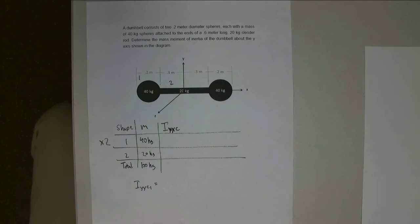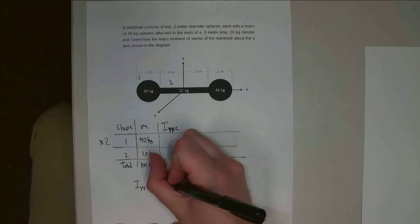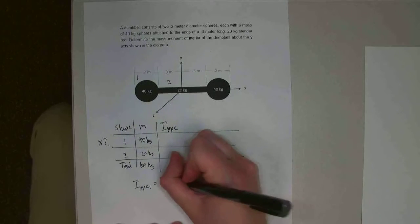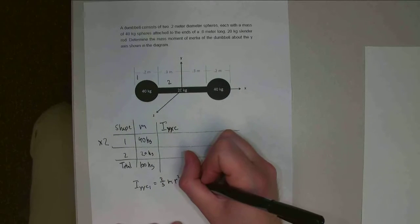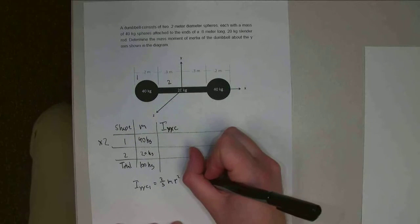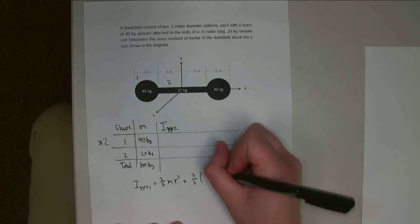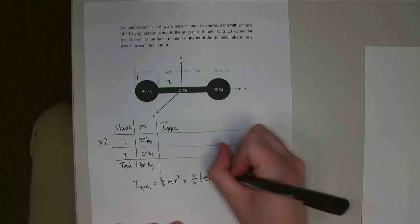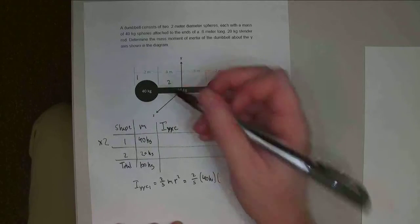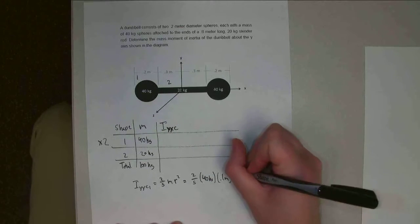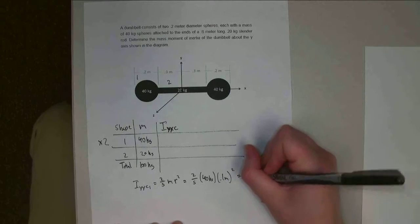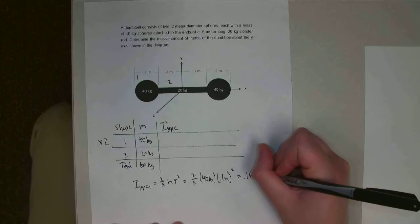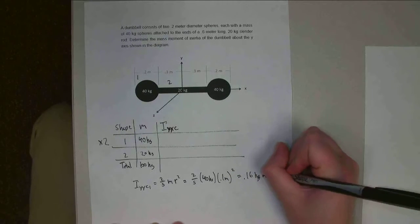If I look this up, this is for a sphere, Iyy should be two-fifths mr squared. So, two-fifths times 40 kilograms times the radius of each one of these is going to be 0.1 meters. And so that's going to give me 0.16 kilogram meter squared.